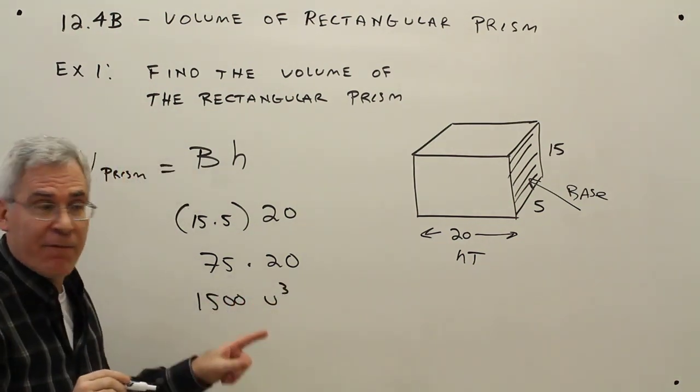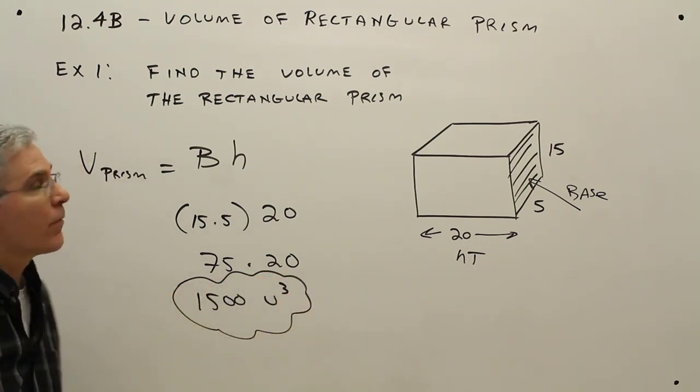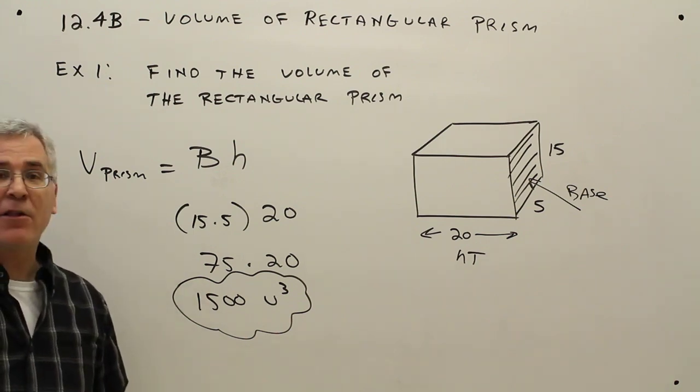And we're talking about volume, so this will be 1500 units cubed. So there you have it. How to find the volume of a rectangular prism.